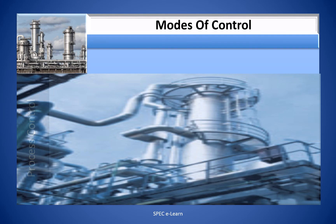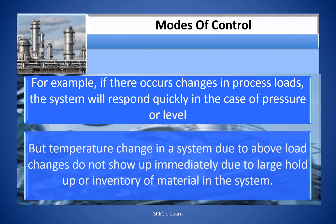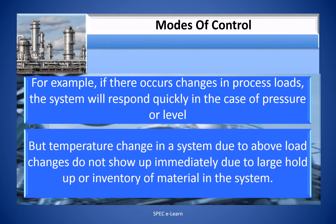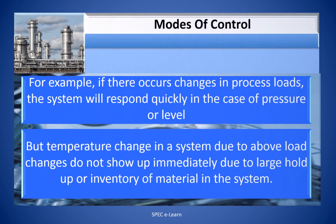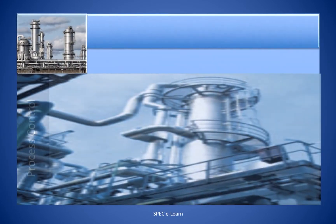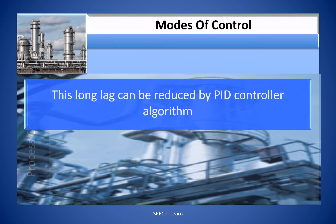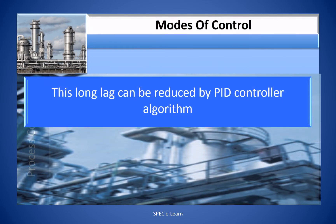For example, if there occur changes in process loads, the system will respond quickly in the case of pressure and level, but temperature change in a system due to those load changes does not show up immediately due to the large hold-up of inventory or material in the system. This long lag can be reduced by the PID control algorithm.